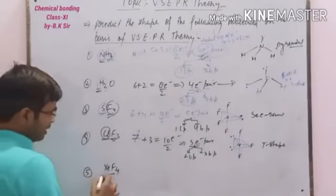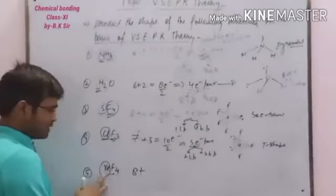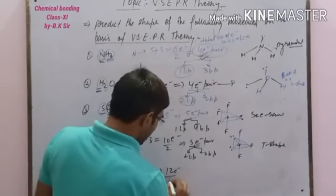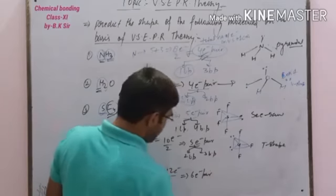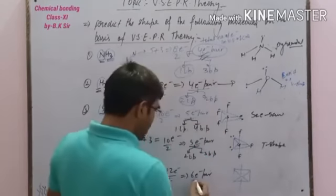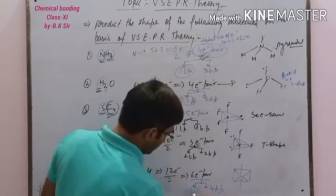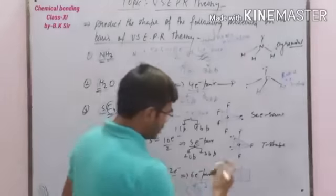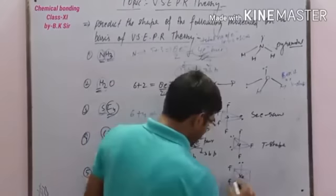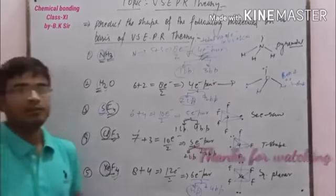The next molecule is XeF₄. Xenon is the central atom, and in the valence shell of xenon there are 8 electrons plus 4 electrons from fluorine, giving a total of 12 electrons. The number of electron pairs is 6. Due to 6 electron pairs, the geometry should be square bipyramidal (octahedral). Out of 6 electron pairs, there are only 4 bond pairs and the remaining 2 are lone pairs. We place the 2 lone pairs above and below the plane, with xenon in the center and fluorine as peripheral atoms, and the remaining geometry will be square planar. In this way we can predict the geometry of different molecules.